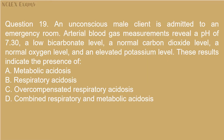Question 19: An unconscious male client is admitted to an emergency room. Arterial blood gas measurements reveal a pH of 7.30, a low bicarbonate level, a normal carbon dioxide level, a normal oxygen level, and an elevated potassium level. These results indicate the presence of: A) Metabolic acidosis, B) Respiratory acidosis, C) Overcompensated respiratory acidosis, D) Combined respiratory and metabolic acidosis.